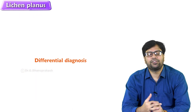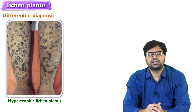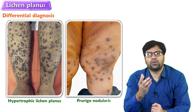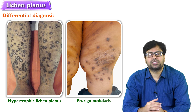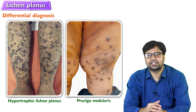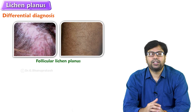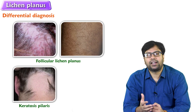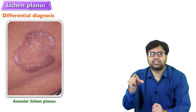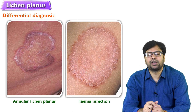Lichen planus can have a few differential diagnoses. Hypertrophic lichen planus needs to be differentiated from prurigo nodularis, which is due to chronic insect bite reactions on dry skin. Follicular lichen planus should be differentiated from keratosis pilaris or lichen spinulosorum. Annular lichen planus — ring-shaped lichen planus — should be differentiated from tinea infections.